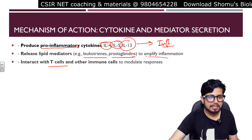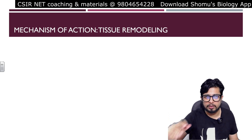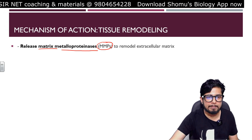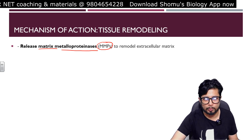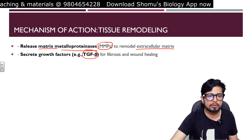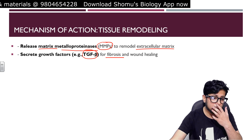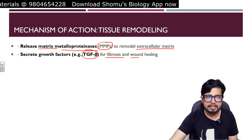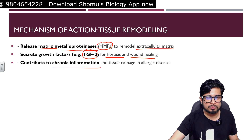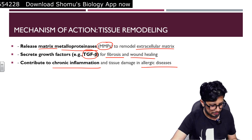Eosinophils also interact with T cells and other immune cells to modulate responses. Tissue remodeling is another role: eosinophils release matrix metalloproteinases (MMPs) to remodel the extracellular matrix, and they secrete transforming growth factor beta (TGF-β). Release of TGF-β causes fibrosis, and this fibrosis can lead to wound healing initiation. They also contribute to chronic inflammation and tissue damage in allergic diseases.